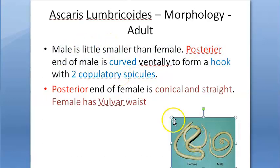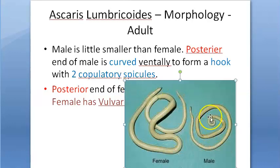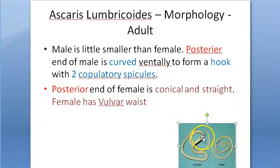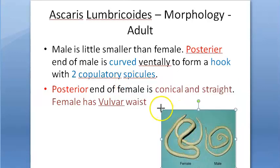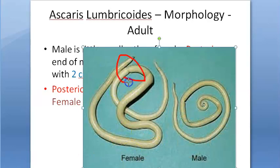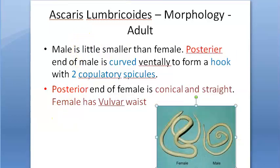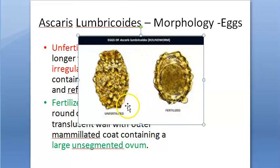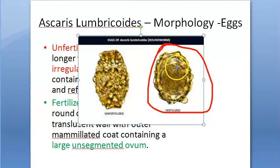Regarding morphology: the male is smaller than the female. The male has a curved hook at the posterior end with two copulative spicules. The female is longer and bigger; the posterior end of the female is conical and straight. The female has a vulvar waist. For egg morphology: unfertilized eggs are full of granules, while fertilized eggs contain a large unsegmented ovum inside.